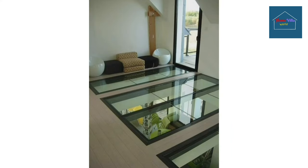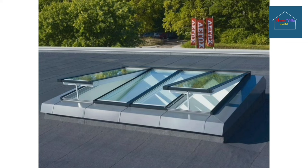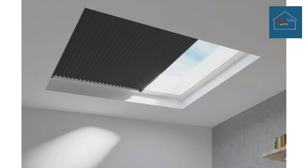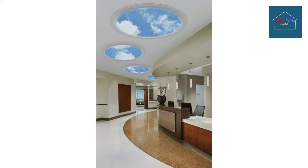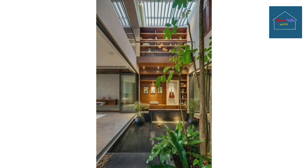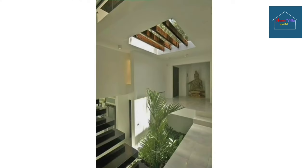Ridge skylights are those where the skylight continues in the same plane as the roof pitch. These roof skylights are pitched and placed to straddle the peak of the roof. Essentially, these skylights follow the slopes and ridge of the roof and open up the top to natural light and sky views in different directions.